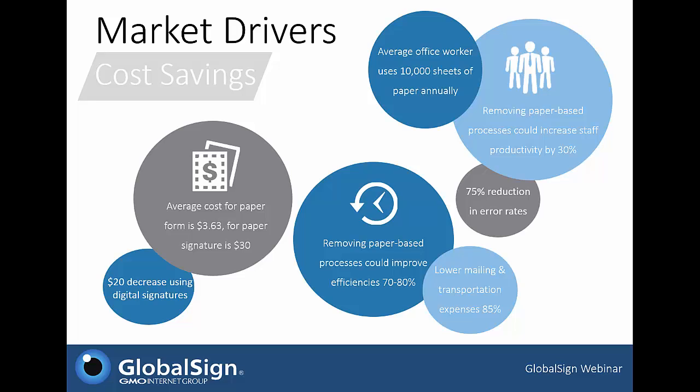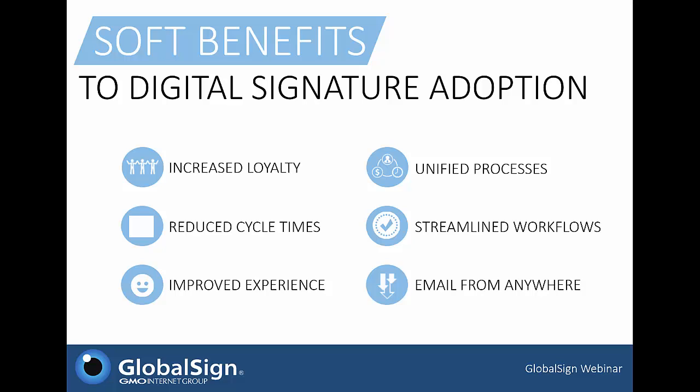In a study on the benefits of e-signatures, Ombud Research found that digital signatures cost $20 less per document compared to paper-based signatures. Additional soft benefits include improved customer experience, reduced cycle times, improved compliance, and reduced environmental impact. Some institutions have experienced cycle times reduced from weeks to days or from days to hours, shipping cost savings up to 80%, and error rates reduced to less than 5% — with all these investments paying off in less than two years.